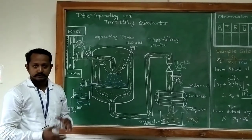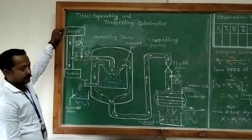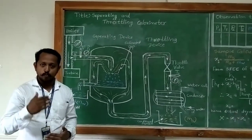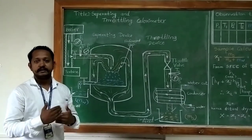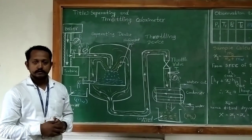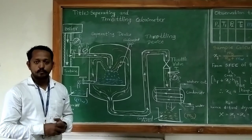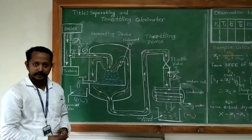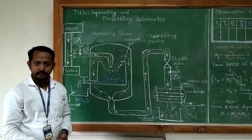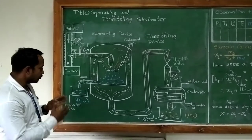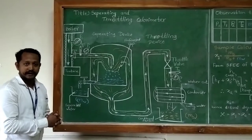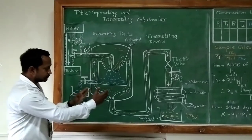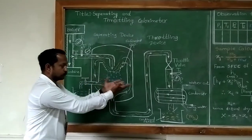We know the steam is generated in the boiler and it is supplied to the turbine. But before supplying it to the turbine, one should ensure what is the dryness fraction of the steam. The dryness fraction required for steam whenever it is supplied to the turbine should be around 80% or more. So, to know the exact amount of dryness fraction, one should use some device like the separating calorimeter.